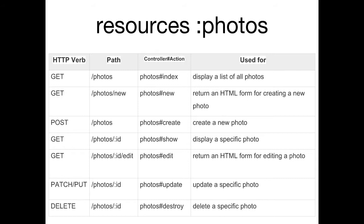A POST request is what happens when you submit a form — you can't do a POST by typing a URL. When you POST to photos it hits the create action, same as users#create or sessions#create. POST means you're telling the server you want to make changes — that's the convention. We don't want to make changes with a GET request. The colon in the route like ':id' represents a URL parameter accessible via params.